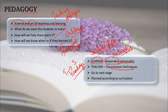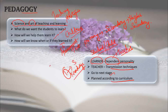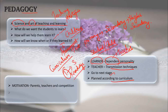Pedagogy is child-centered. The learner and teacher are both involved. In school, the child will first be in primary, then move on to secondary, and then higher secondary — these are the different stages in the school curriculum. The teacher here will teach subjects according to the curriculum or the syllabus only.